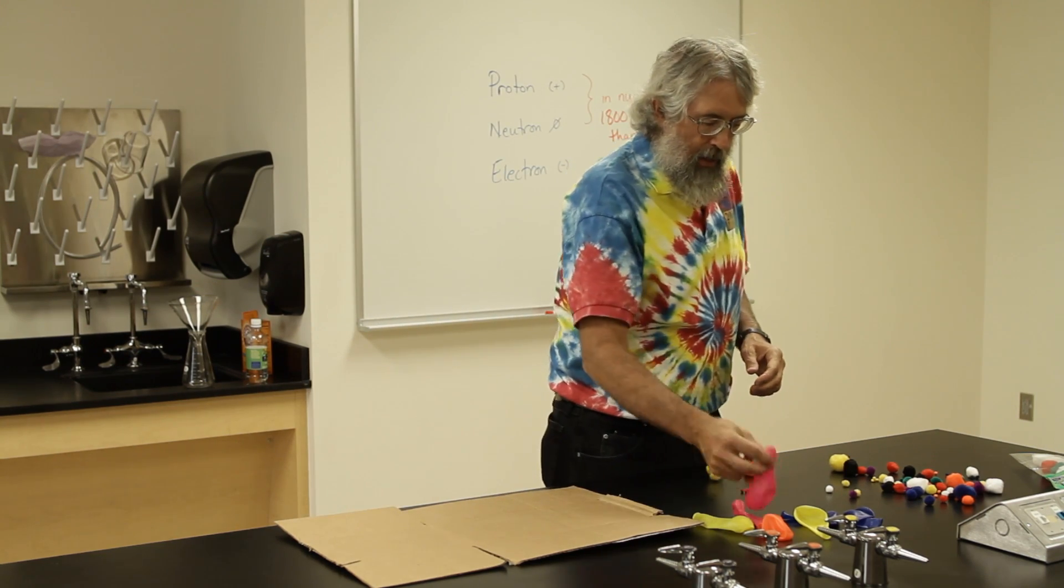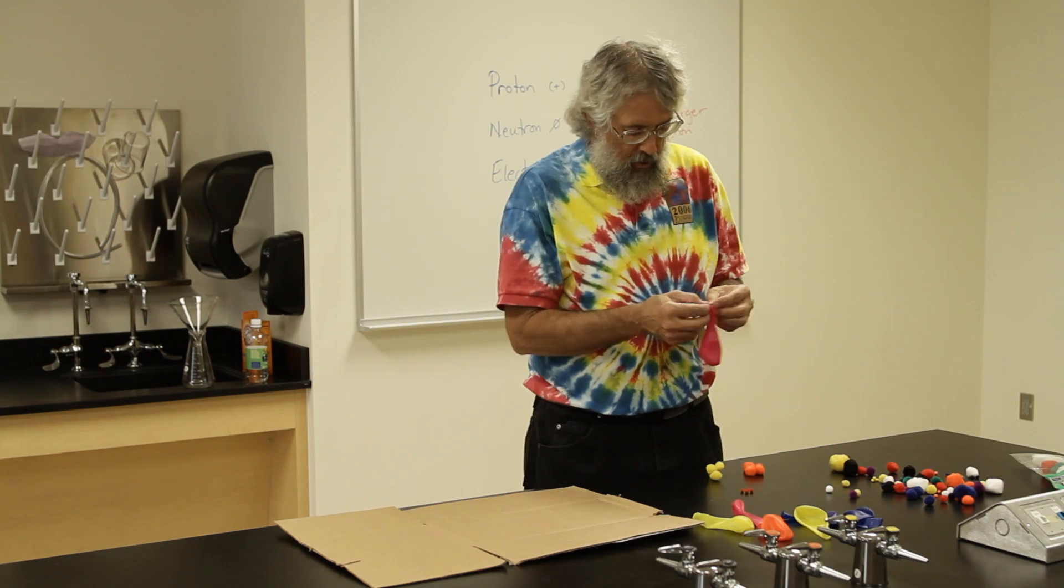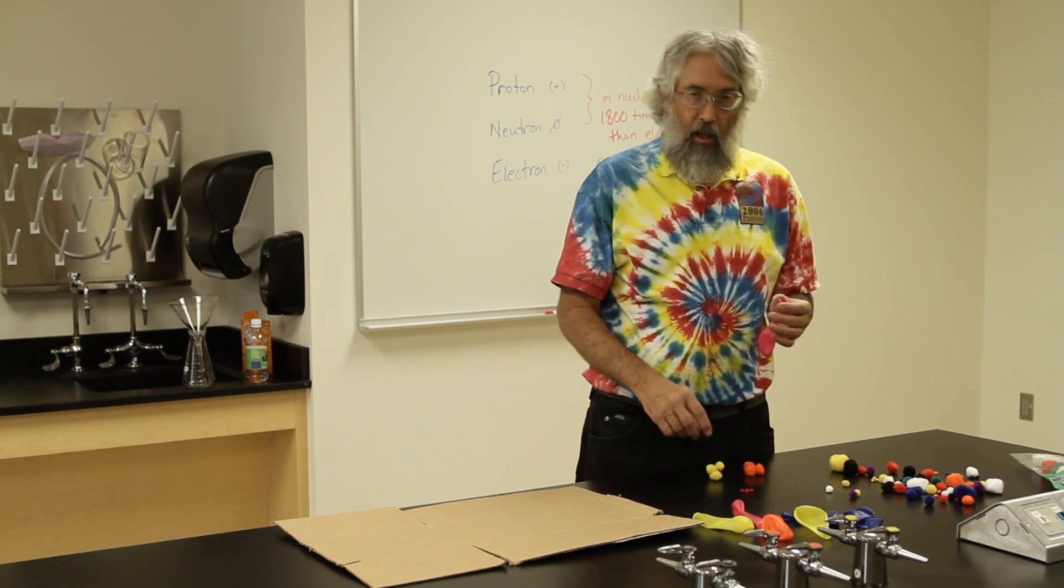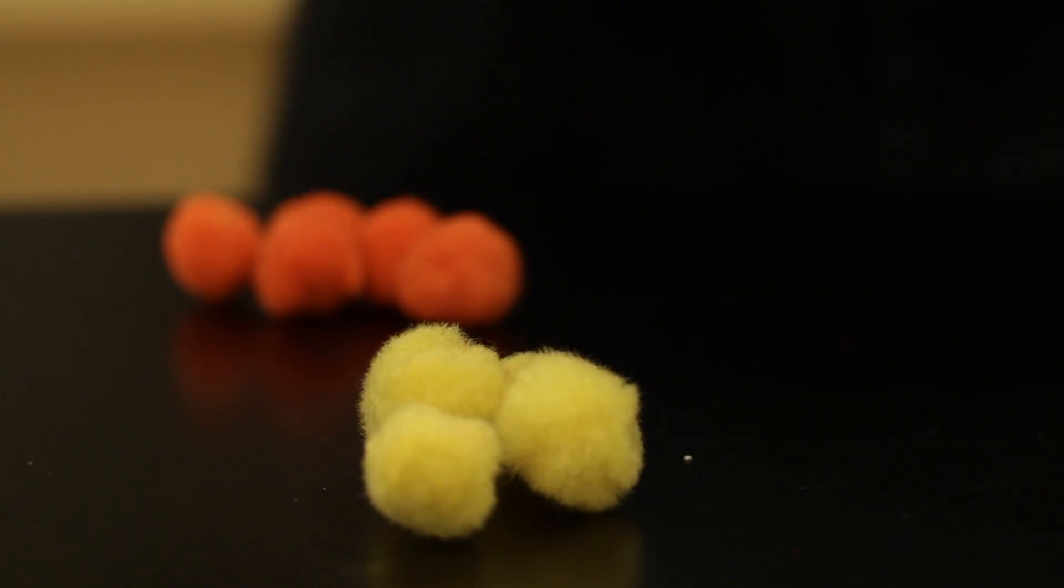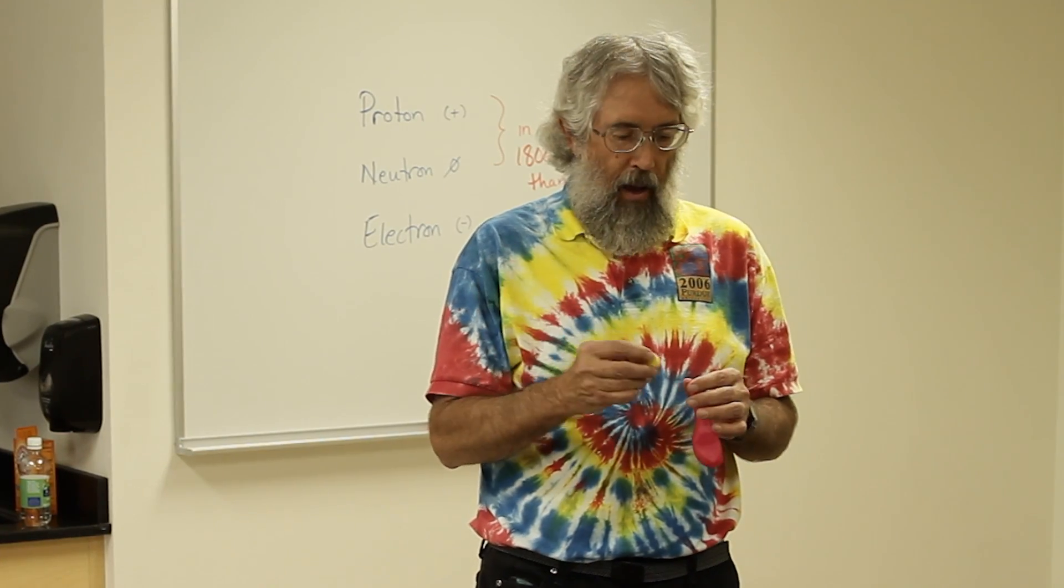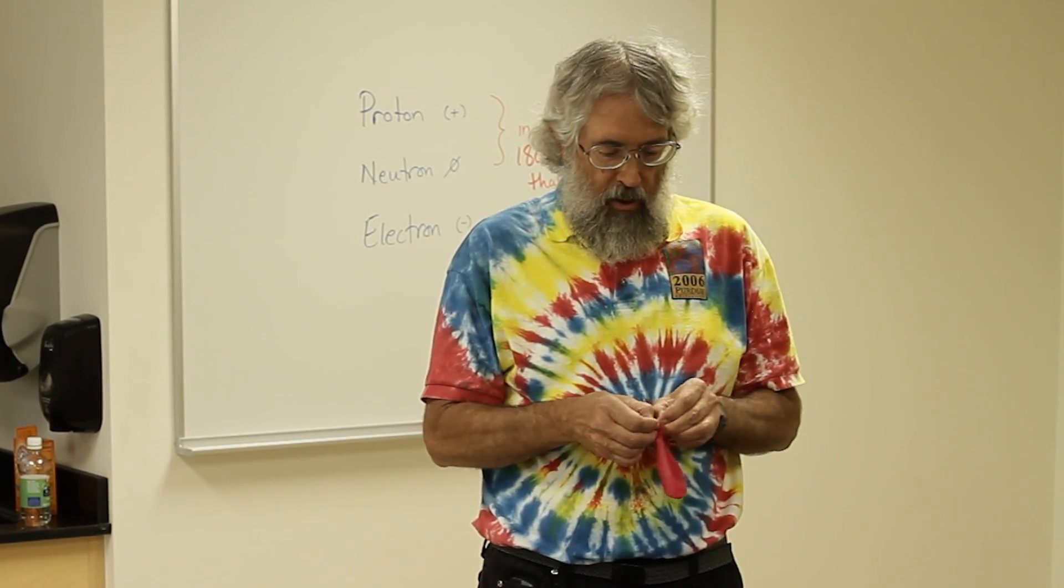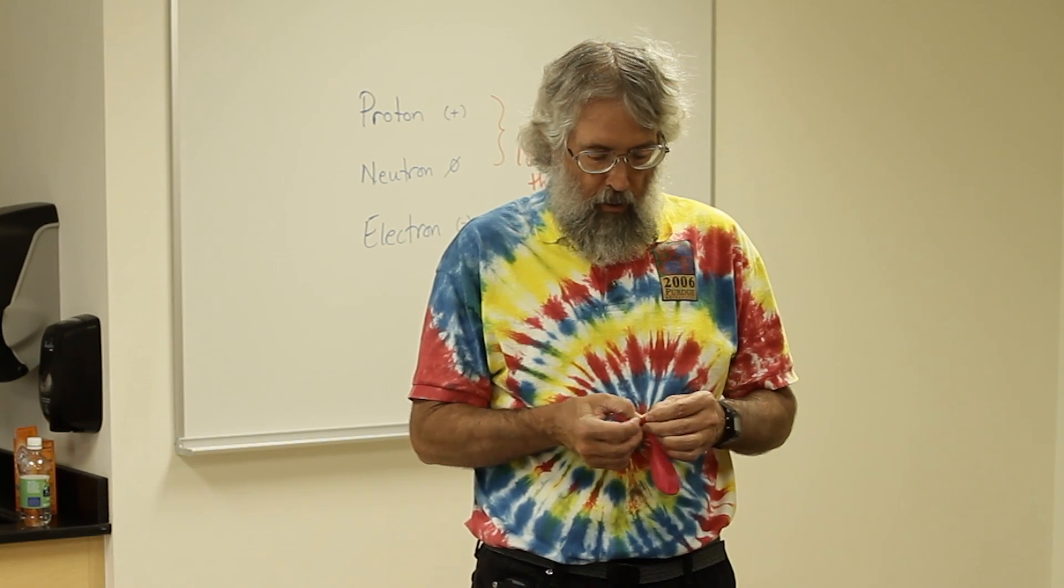So let's begin by getting the nucleus. Now the nucleus contains the protons and the neutrons. So because they are larger, we're going to use some larger pom-poms. We're going to put those into the balloon before we blow it up.